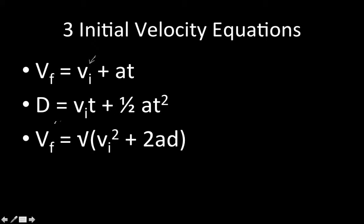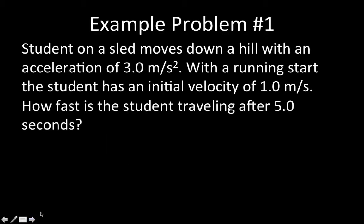In the last equation that we're going to use, it's another one that's solving for final velocity. It's not written really great, but that's supposed to be a square root. Another way to find the final velocity is to take the square root of the initial velocity squared, added to two times acceleration times distance. So let's just do some examples so you can see this in action.